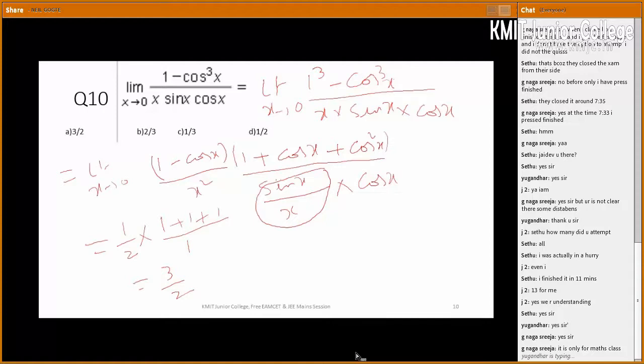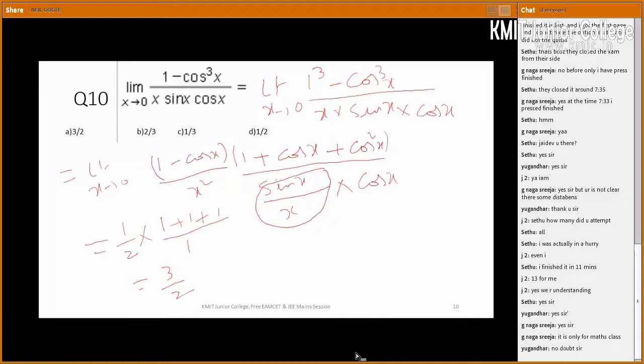Even though this problem in place of x, if you put 0, what I am getting? Cos 0, 1. 0. Even though it is in the form of 0 by 0, I have not applied L'Hôpital's rule. I have not applied L'Hôpital's rule. Why? You can apply. You will get answer. It takes more time. Because here again you have to apply, multiply with 2, divide with 2, 2 sinx cosx, 2 sinx cosx, sin 2x, apply UV formula. It takes more time.